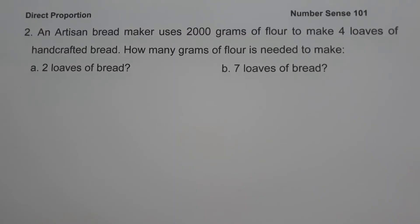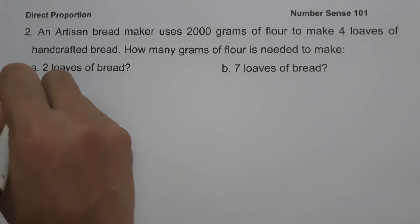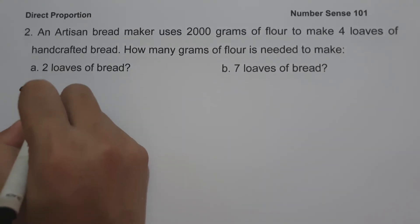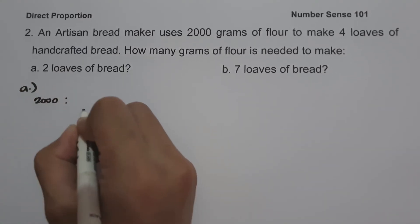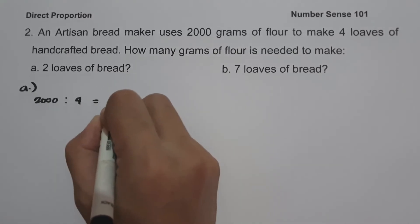On example number 2, an artisan bread maker uses 2000 grams of flour to make 4 loaves of handcrafted bread. How many grams of flour is needed to make: letter A, 2 loaves of bread; letter B, 7 loaves of bread. On letter A, to determine how many grams of flour is needed for 2 loaves of bread, let us have 2000 grams of flour is to 4 loaves of handcrafted bread equals X — that is the number of grams of flour needed for 2 loaves of bread.